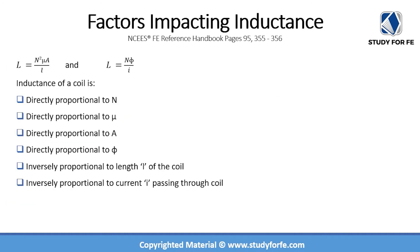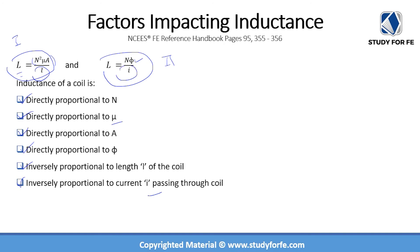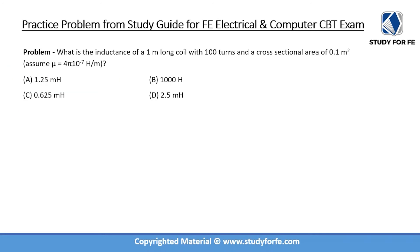Based on these two equations, we can identify which factors affect inductance. From the first equation, inductance L is directly proportional to the number of turns N, the magnetic permeability μ, and the cross-sectional area A — all appearing in the numerator. It is inversely proportional to the length of the coil and, from the second equation, directly proportional to the magnetic flux φ and inversely proportional to the current I.